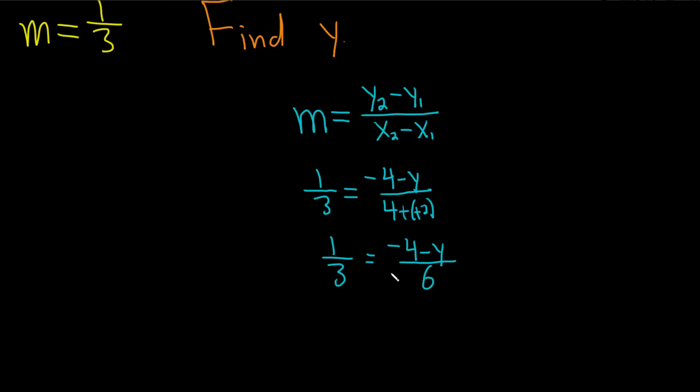I think now we can get rid of this fraction by multiplying both sides by 6. So times 6, and then times 6. This goes away. 6 times 1 third is going to give us 2, and so this is equal to negative 4 minus y.